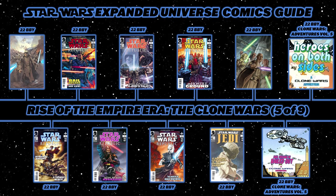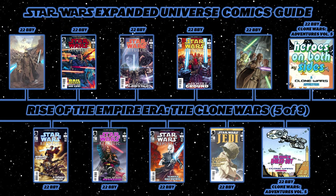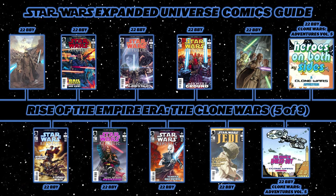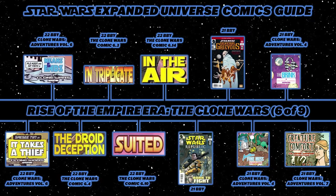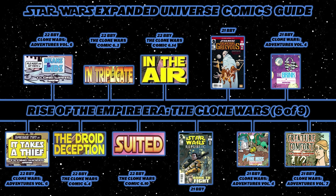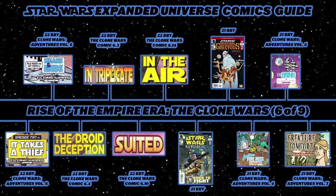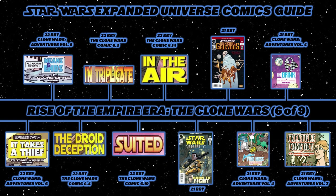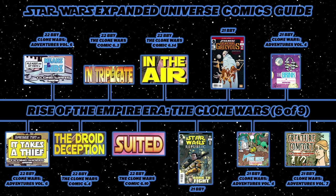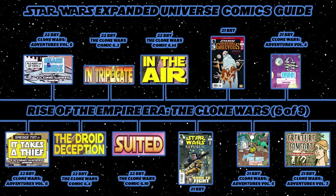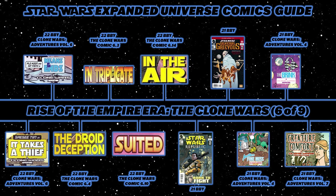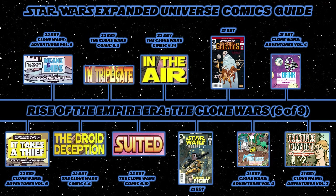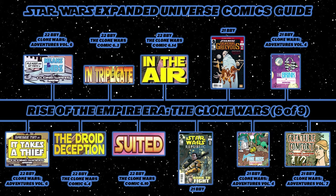Moving back to Clone Wars Adventures Volume 5 for Bailed Out, following Bail Organa, and Heroes on Both Sides. The next slide covers many short stories: Clone Wars Adventures Volume 6's It Takes a Thief and Means and Ends. Then the first stories from the Star Wars Clone Wars UK magazine comic — a UK-printed comic magazine — starting with The Droid Deception in Volume 6 issue 4, In Triplicate in Volume 6 issue 3, Suited in Volume 6 issue 10, and In the Air in Volume 6 issue 14.